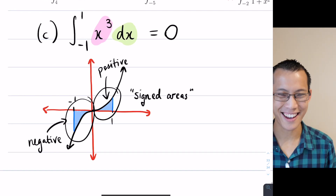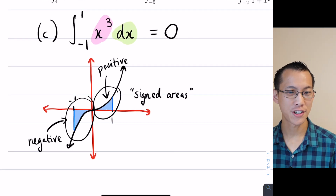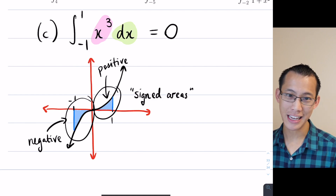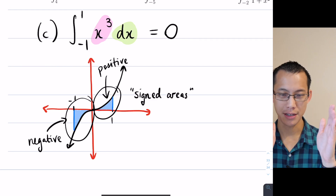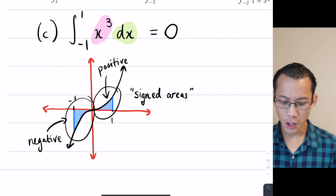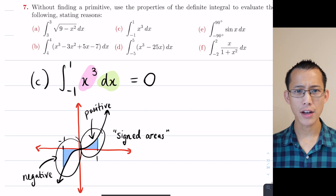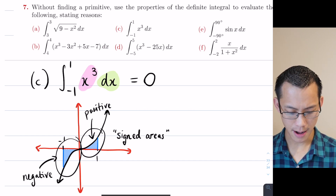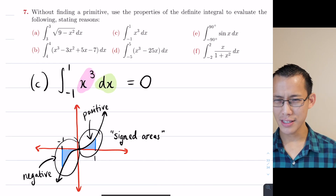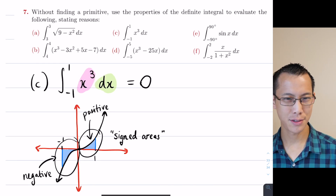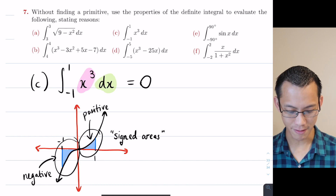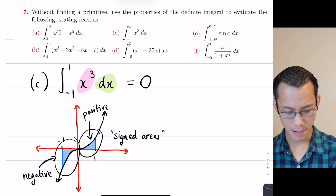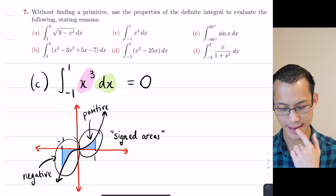The way we describe this: x cubed is an odd function — it has rotational symmetry. Whenever you integrate an odd function over symmetrical boundaries you'll get zero. Before doing another example, have a look at the rest of the parts in question seven — parts a through f. Can you identify which other parts follow this same pattern of having an odd function?